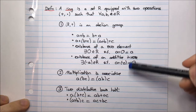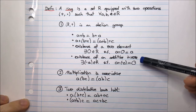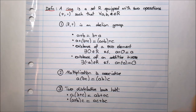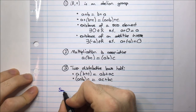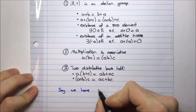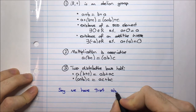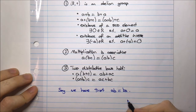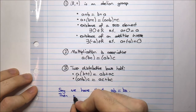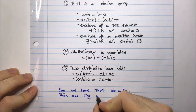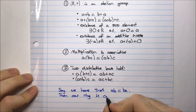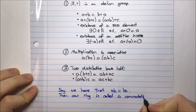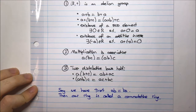For a general ring, we don't have commutativity for multiplication and we don't have an inverse for multiplication. Now, if we do have commutativity — that is, if AB equals BA — then our ring is called a commutative ring, for obvious reasons, because multiplication commutes.